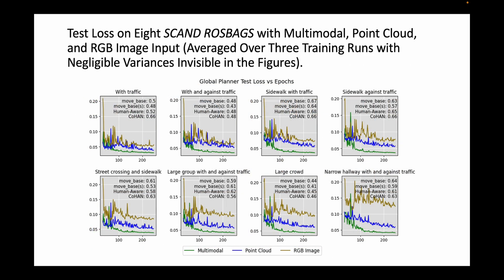This is the performance of our network on eight different test rosbag files considering different social scenarios on a global planning level. We also compare against different classical planners: move base, move base with social layer, human aware planner, and Kohan planner using the same loss function. We observed the multimodal network has the lowest loss while RGB has the highest loss across all test scenarios. The performance difference enlarges with more humans and more confined spaces.